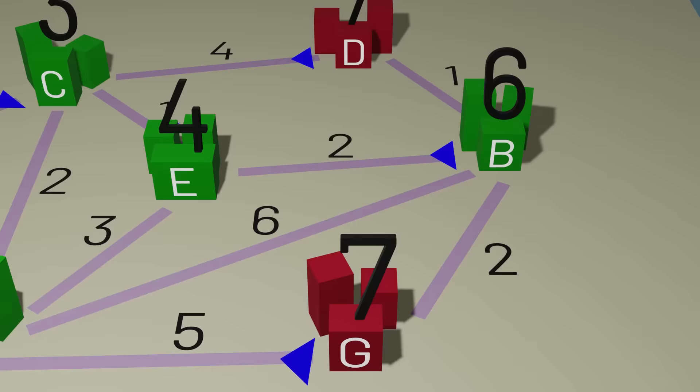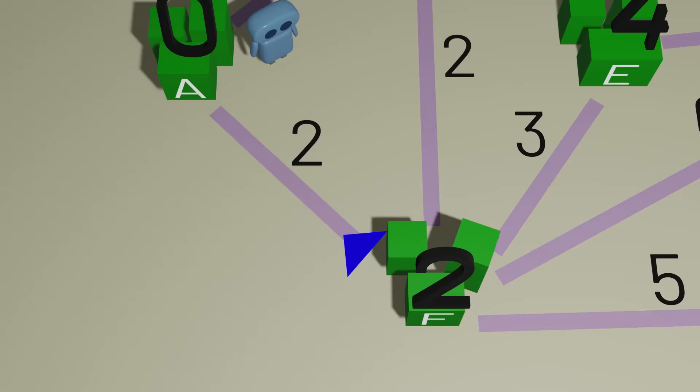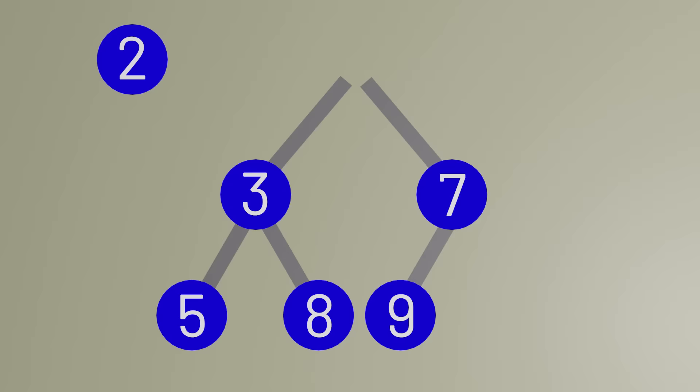Another thing worth thinking about is how we efficiently determine which unexplored town to visit next. We want to always pick the unexplored town with the current smallest estimate, so some kind of priority queue that gives us efficient access to the next town to visit can make our algorithm faster.